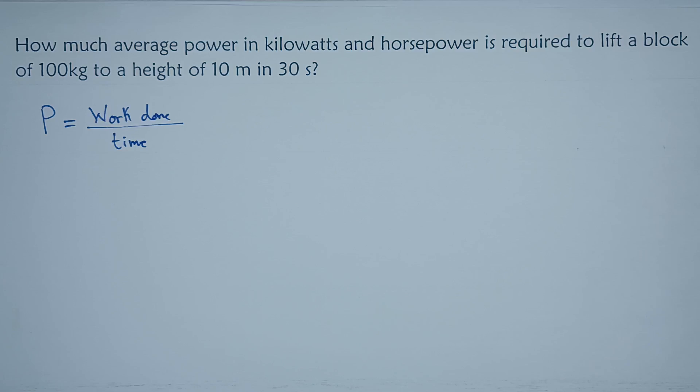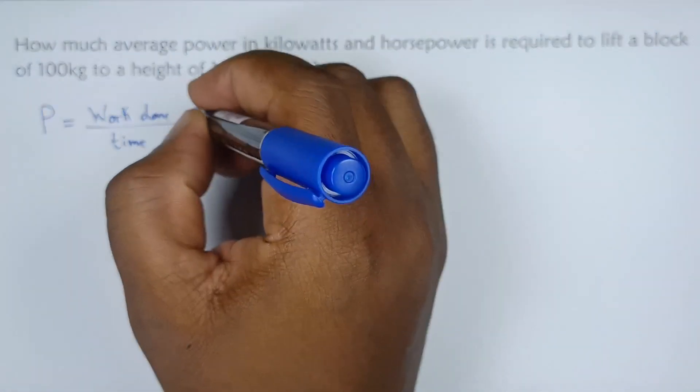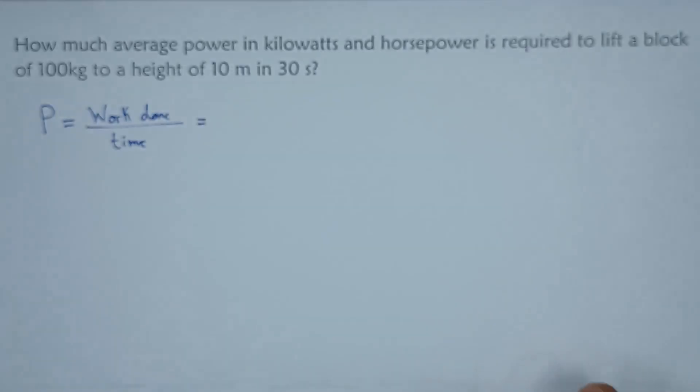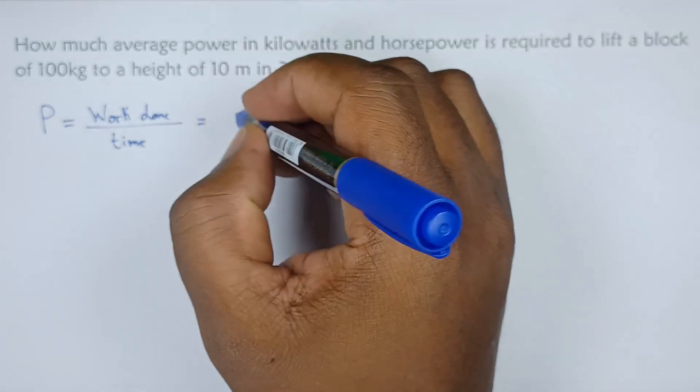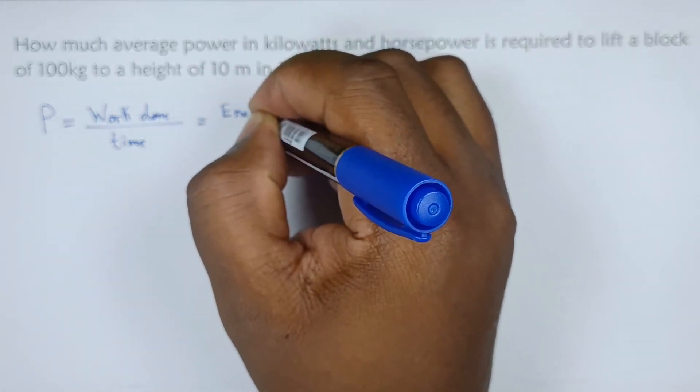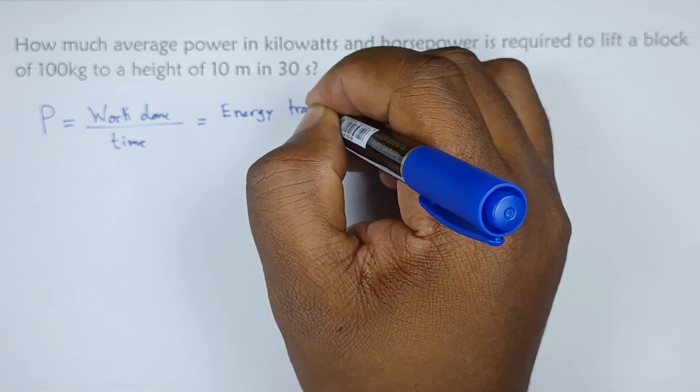Now we know that work is a form of energy. Because we have a height, instead of work done let's consider this to be the change in energy. This can be the change in energy of which it's energy being transferred. Hence we'll say work done is the energy that is being transferred, energy transferred over time.